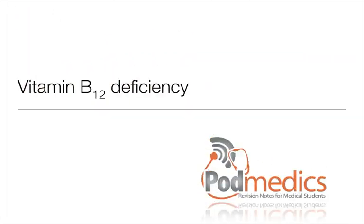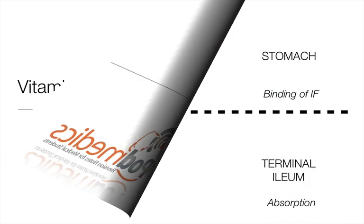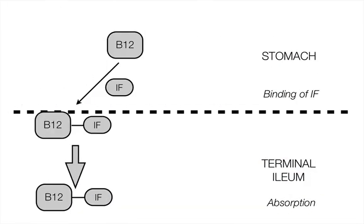To understand vitamin B12 deficiency, you need to understand how it is absorbed. There are two key sites: the stomach and the terminal ileum. In the stomach, vitamin B12 binds with intrinsic factor produced by the gastric parietal cells. This vitamin B12–intrinsic factor complex then travels through the entire small intestine and is absorbed in the terminal ileum.